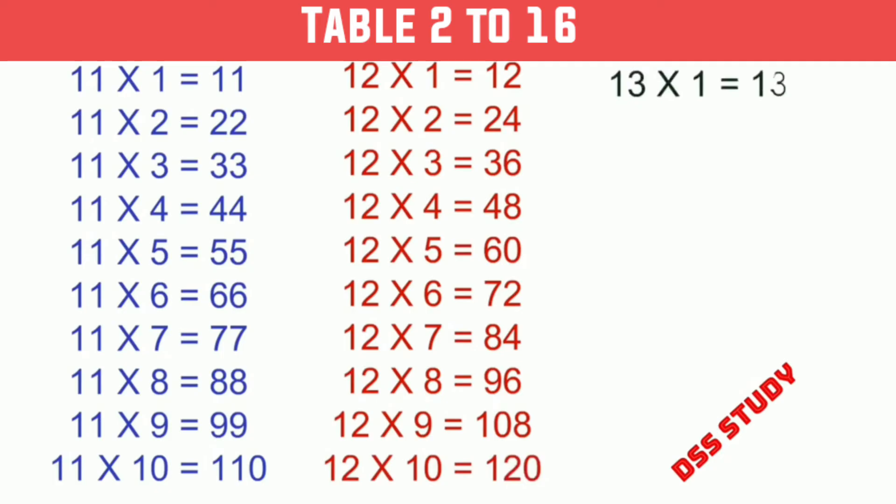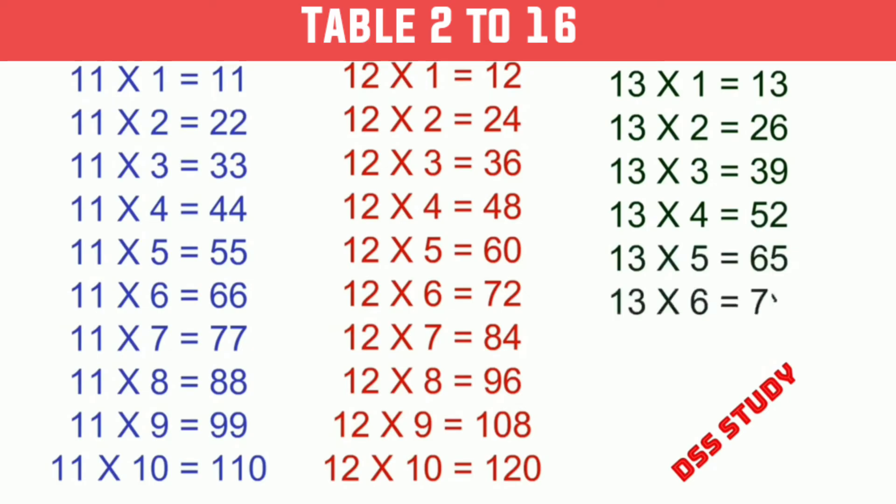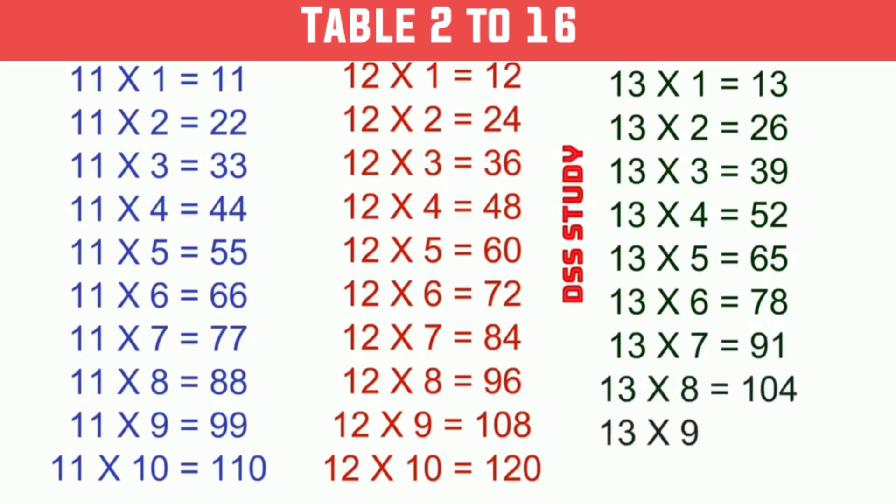13 times 1 is 13, 13 times 2 is 26, 13 times 3 is 39, 13 times 4 is 52, 13 times 5 is 65, 13 times 6 is 78, 13 times 7 is 91, 13 times 8 is 104, 13 times 9 is 117, 13 times 10 is 130.